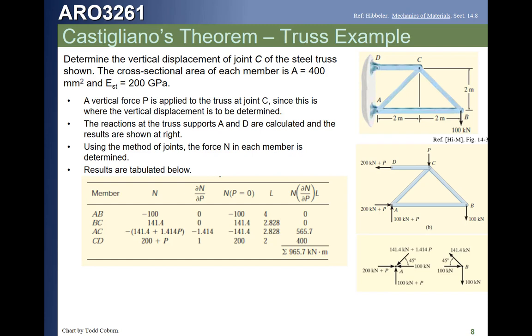The length of the member, it's also convenient. I like to put the E and the A in this table as well, in case those change between the members. We then can apply Castigliano's Theorem. They're doing a partial application of Castigliano's Theorem in the last column in this table, where they have N multiplied by dN/dP multiplied by L. You then sum all those up, and then since this didn't have E or A, we'll then apply the last pieces to calculate what the deflection is. See how easy that is?